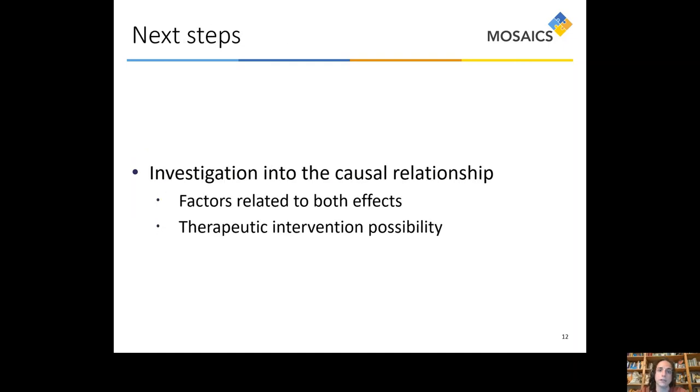Now, what are the next steps for the investigation? The next important step is an investigation into the causal relationship that is linking better performance and wider dynamic range. Are there some factors which relate to both effects, some factors such as, for example, neural health, which influence both dynamic range and speech perception? Or is there the possibility of a therapeutical intervention? Therefore, by adjusting subjects' maps in order to slowly force a wider dynamic range, we could improve their scores. These are the two directions in which we're going to continue the investigation.